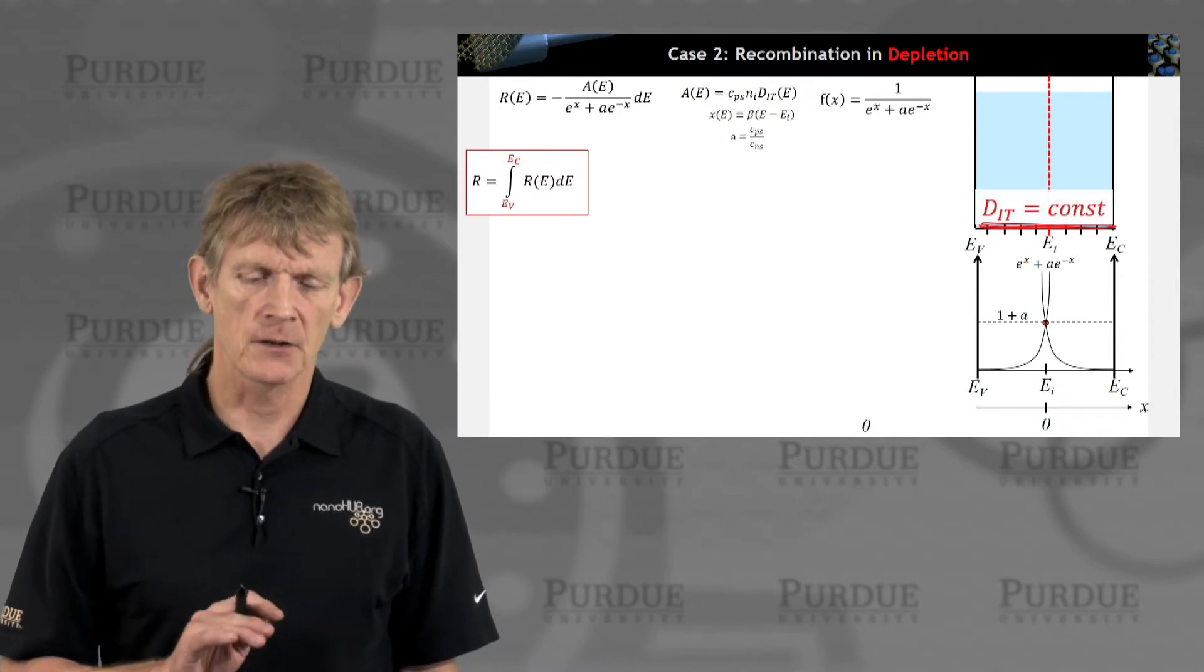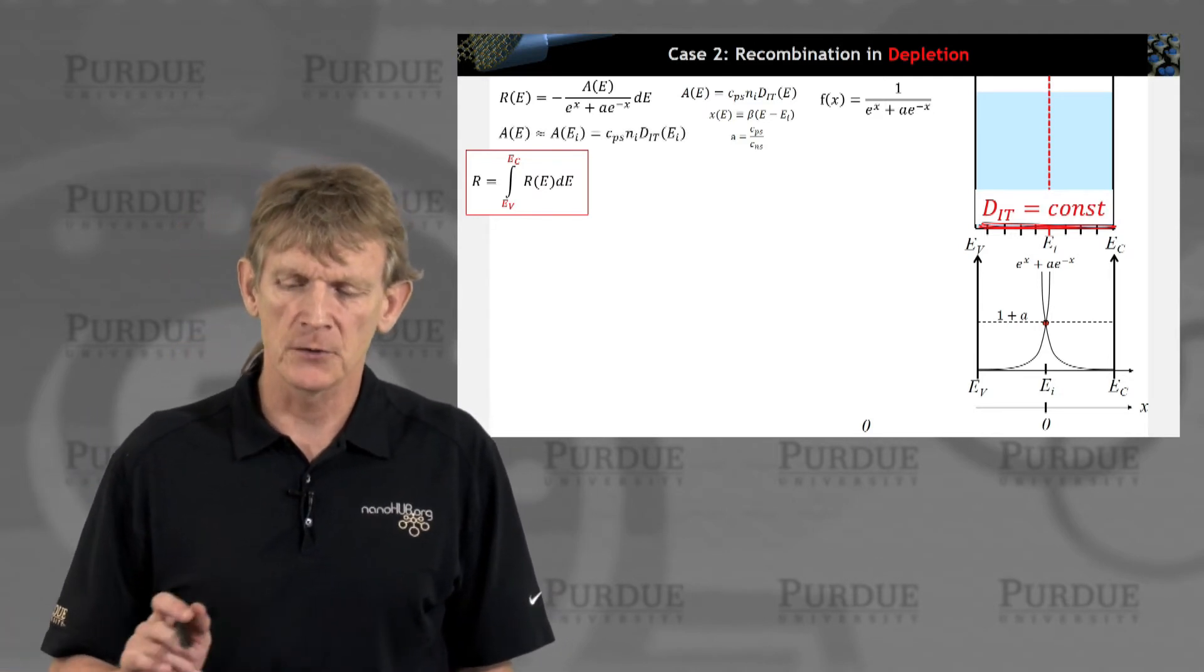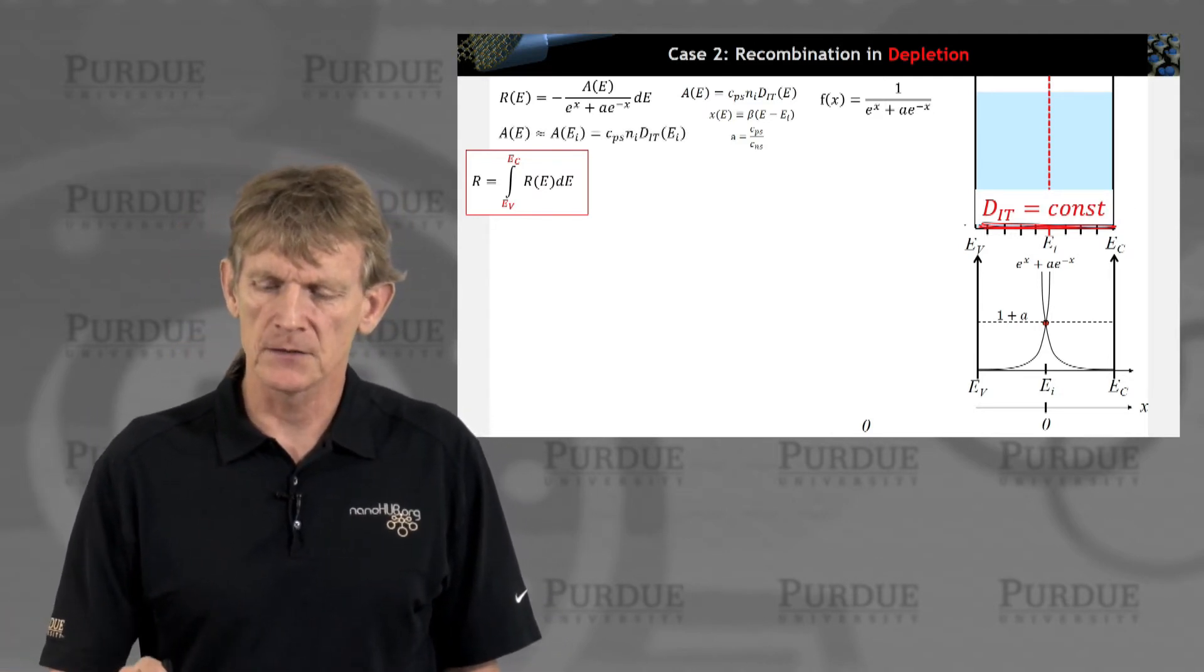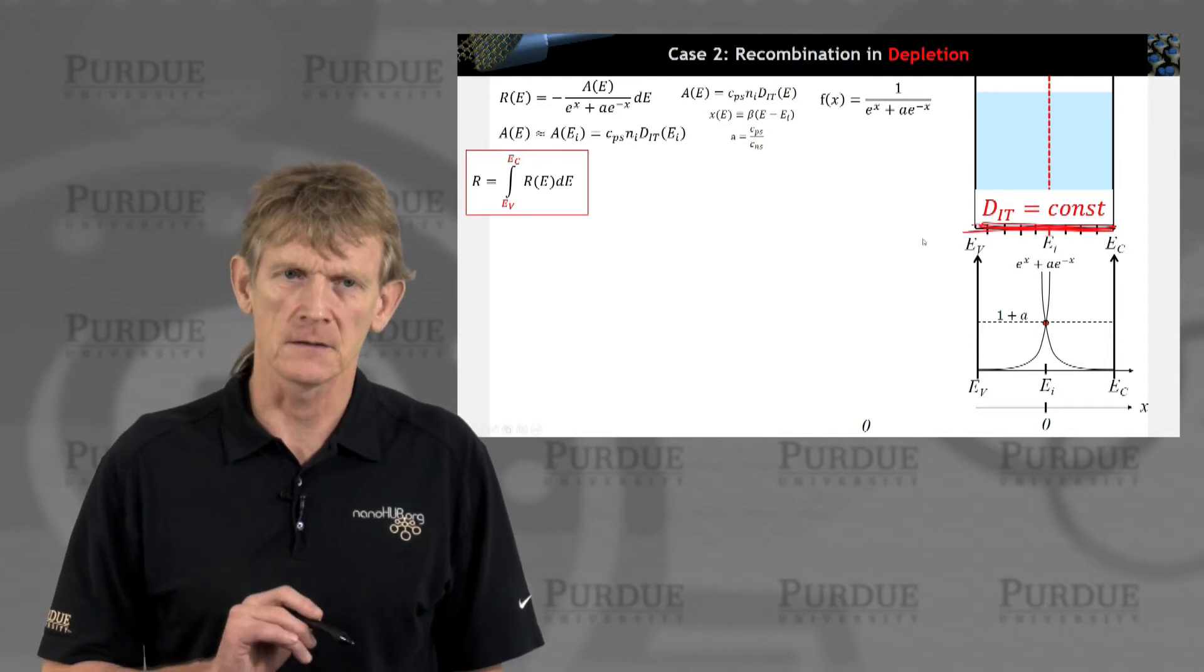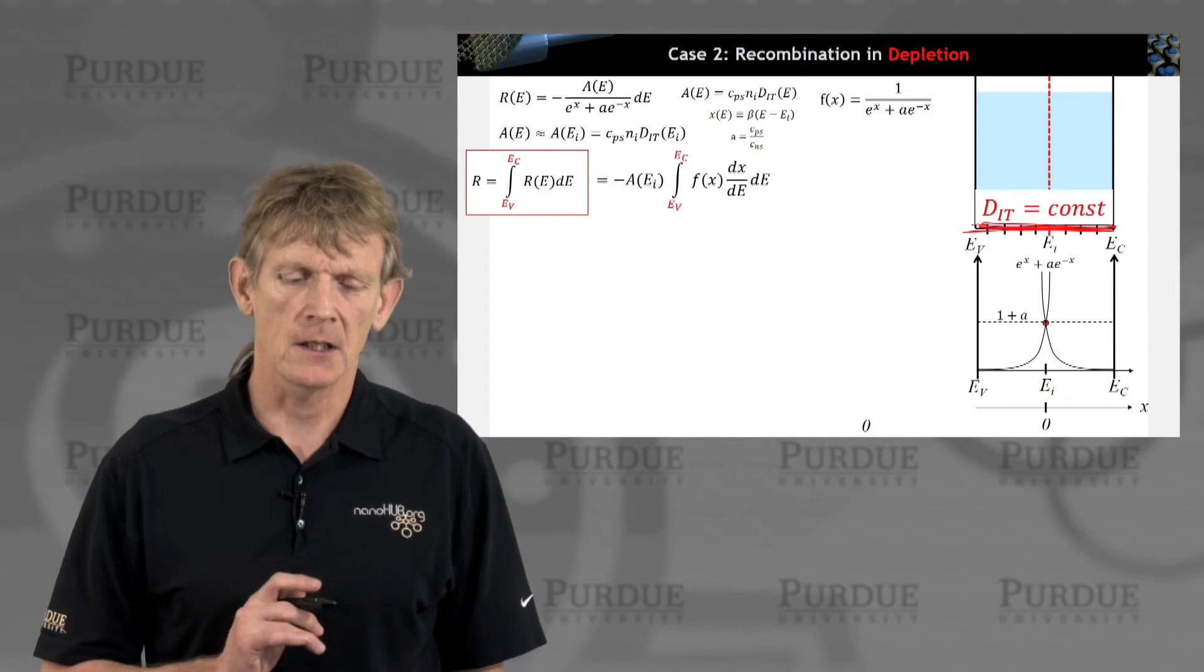Let me formulate this integral in terms of my help function f. Before I do that, I'm going to assume that these densities of interfaces are constant throughout the gap. That means I can pull this out of the integral.